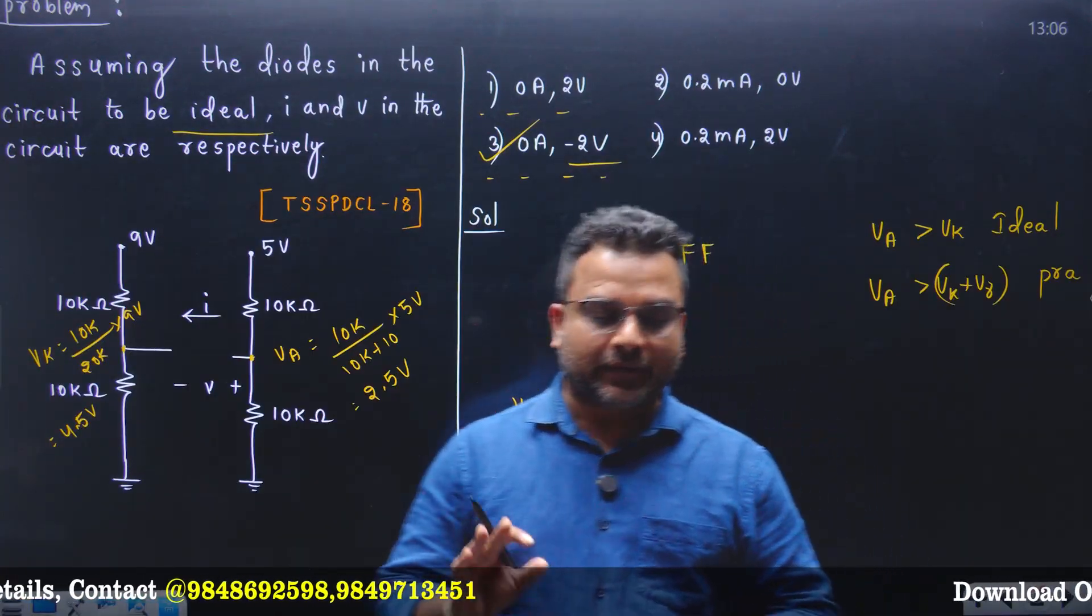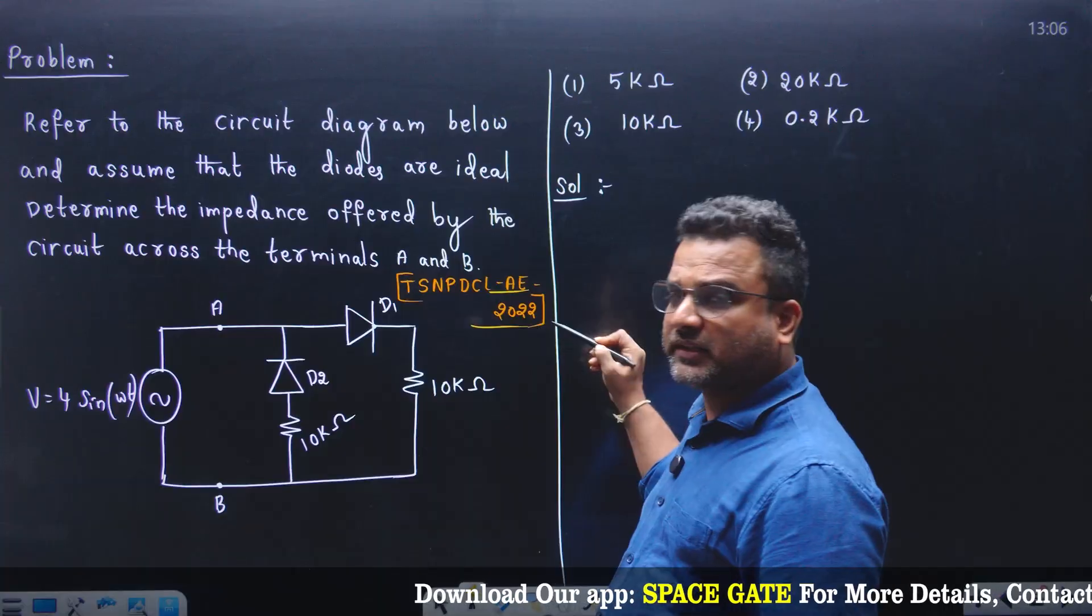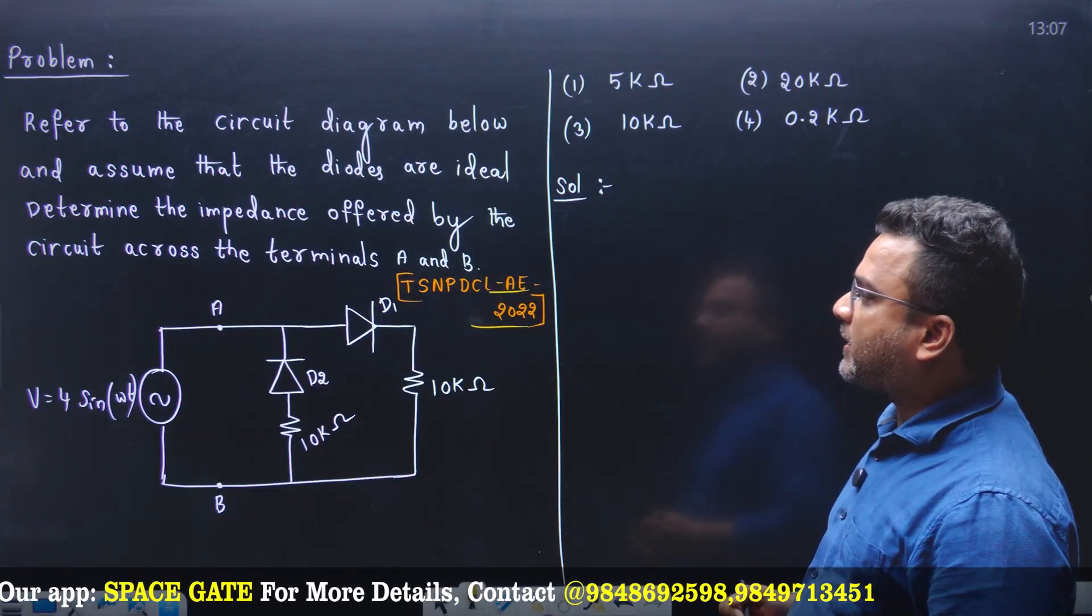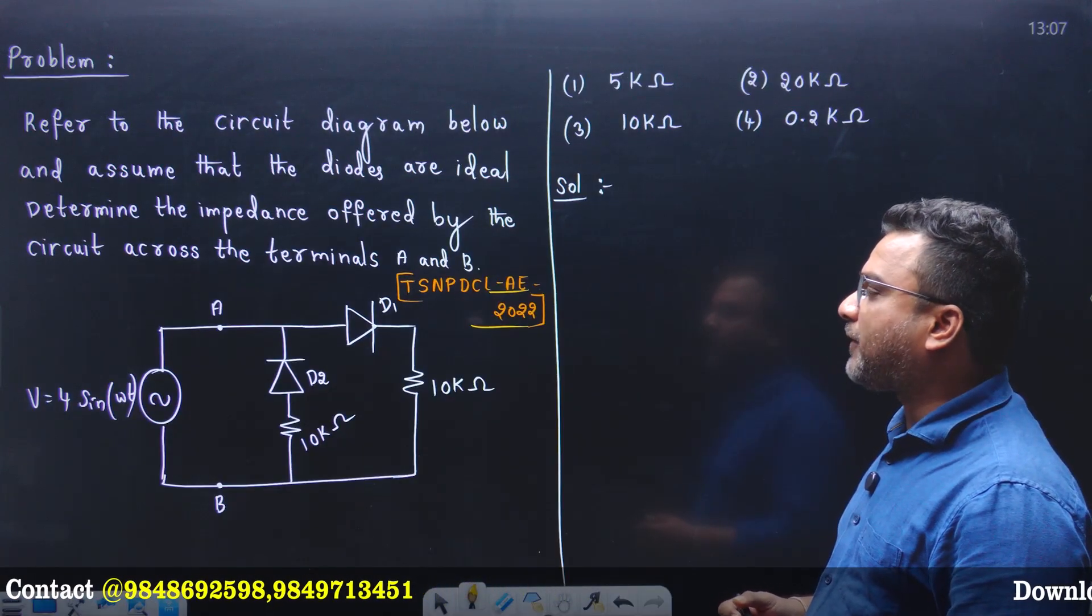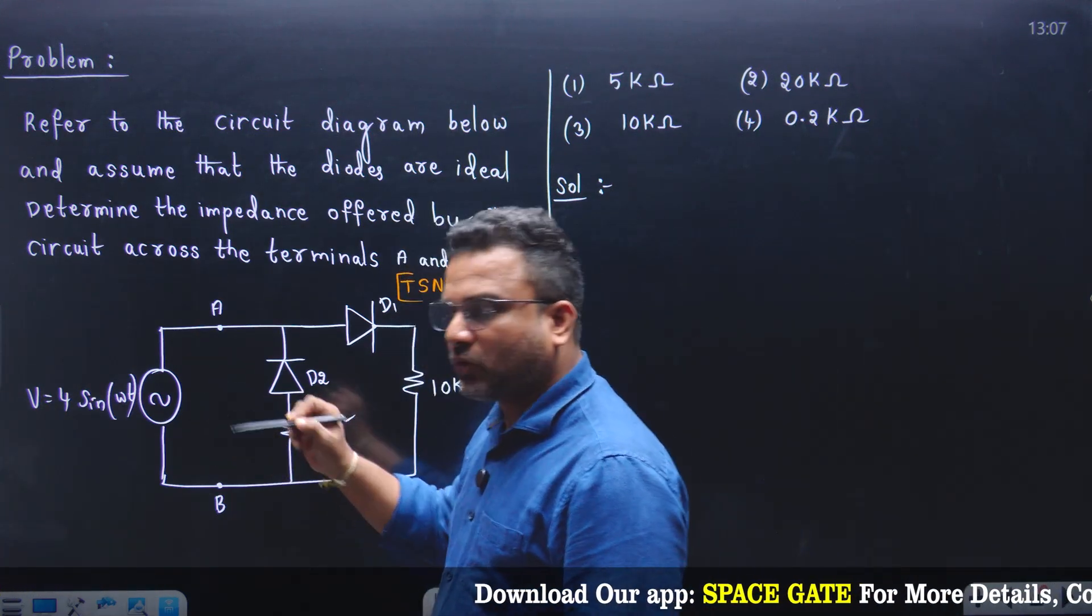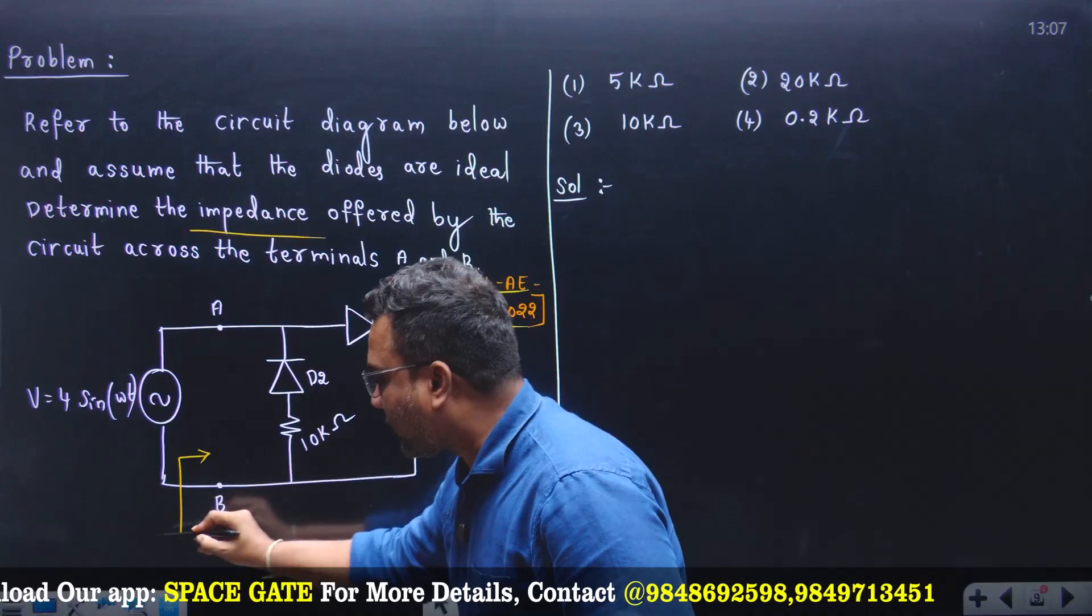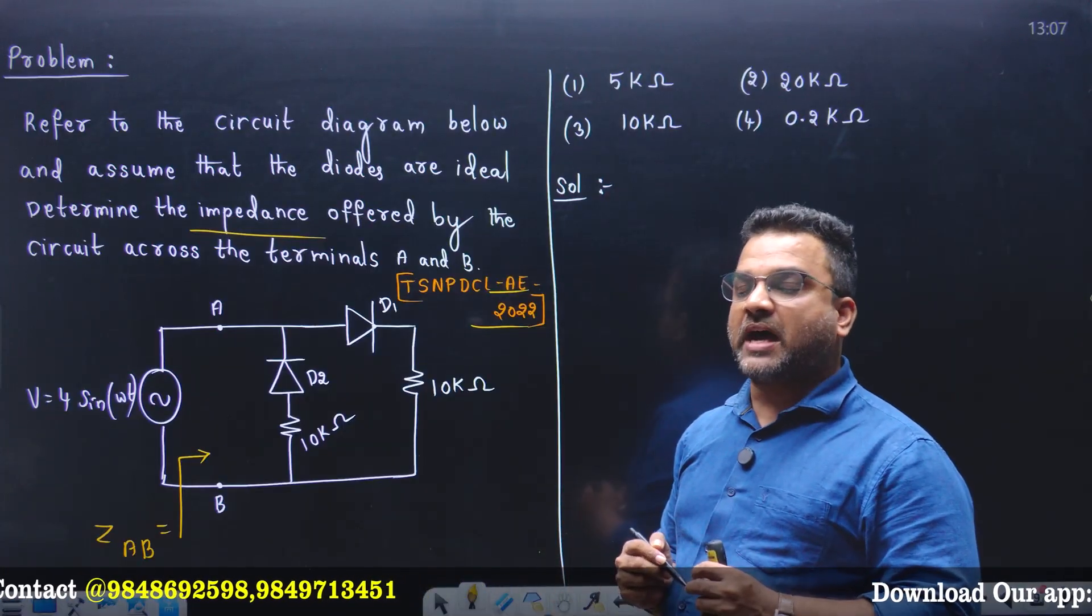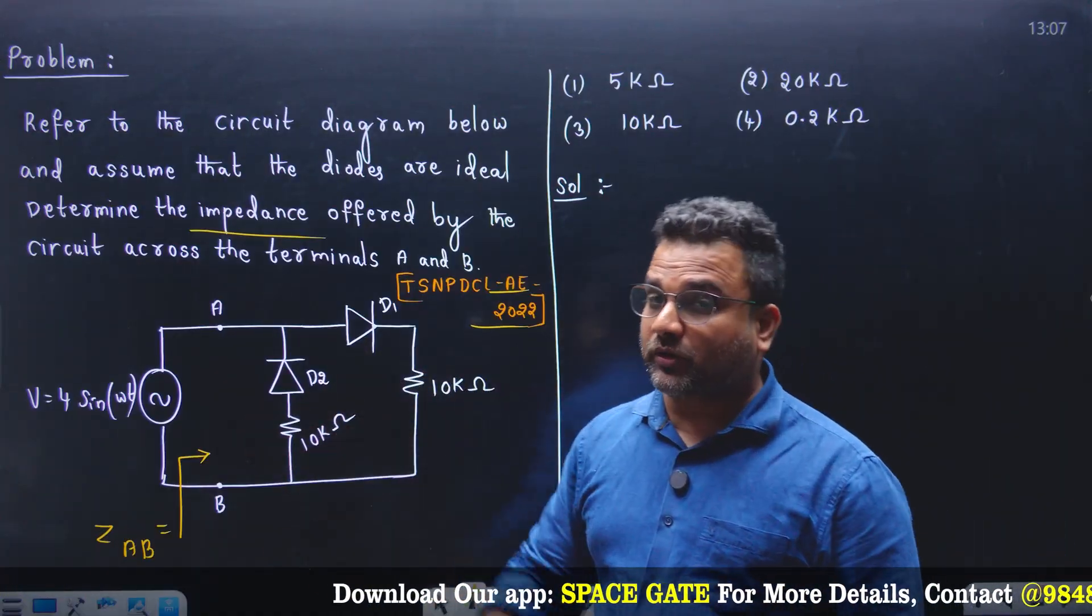Let's take another question asked in AE 2022. Refer to the circuit diagram below and assume that the diodes are ideal. Determine the impedance offered by the circuit across the terminals A and B. This is a sinusoidal input voltage and they are asking what is the impedance by looking into the terminals A and B, the input impedance offered by the A B terminals.